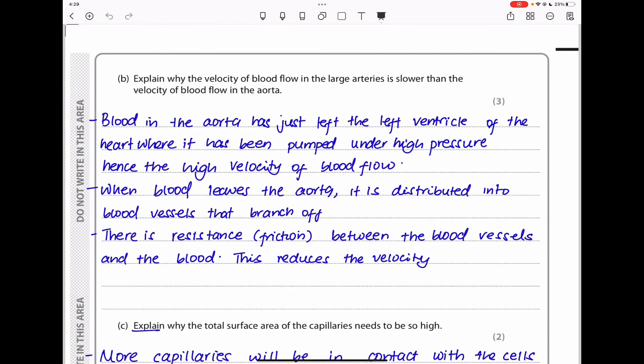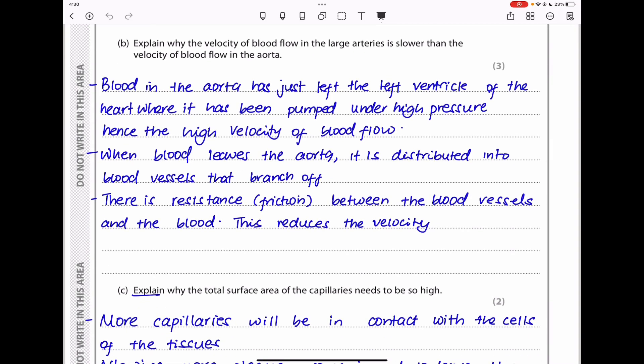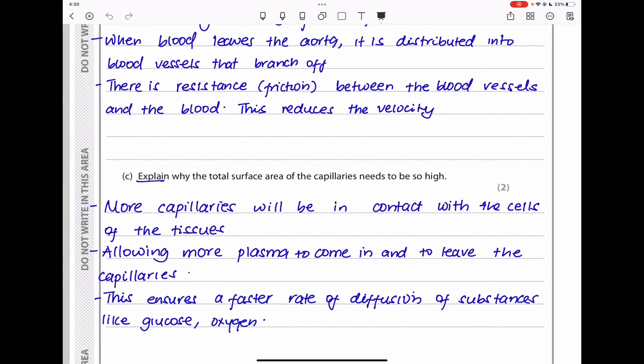Explain why the velocity of blood flow in the large arteries is lower than the velocity of blood flow in the aorta. Blood in the aorta has just left the left ventricle. In the left ventricle, there is a lot of pumping. Blood is going to be pumped at very high pressure. If it has just left the left ventricle of the heart where it has been pumped under high pressure, hence the high velocity of the blood flow. In the aorta, we have a higher blood flow because the blood has just left the left ventricle where it has been pumped at high pressure. When blood leaves the aorta, it is distributed into blood vessels that branch off, so there is resistance. This could be friction between the blood vessels and the blood, and this can reduce the velocity. Because there is no further pumping, velocity is going to decrease due to the friction or resistance between the blood vessels and the blood.